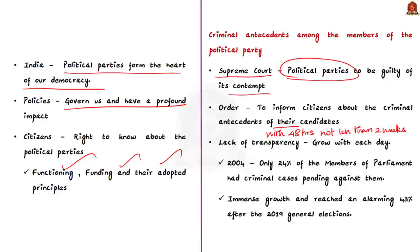This lack of transparency is not something new and continues to grow. In 2004, only 24% of Members of Parliament had criminal cases pending against them. But this figure saw an immense growth and reached an alarming rate of 43% after the 2019 general elections.